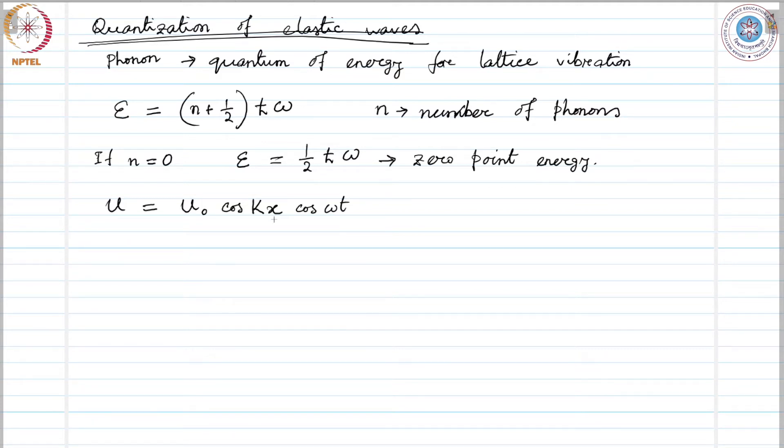It is the displacement from the equilibrium position in the crystal and the energy in this mode, as in any harmonic oscillator, is half kinetic energy and half potential energy on average over time. The kinetic energy density can be expressed as ½ρ(du/dt)².